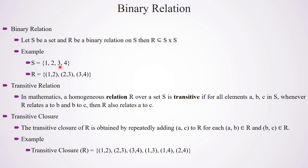First of all we will look at the formal definition of binary relationship. Let S be a set and R be a binary relation on S. Then R is a subset of S cross S. S cross S is nothing but a Cartesian product. Here I have an example: the set contains 4 elements 1, 2, 3 and 4, and here I have some ordered pairs. This R is a subset of S cross S, the Cartesian product of S and S, and can be considered as a binary relation on set S.